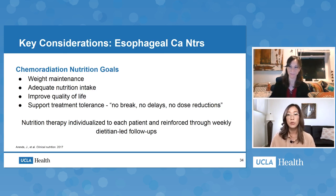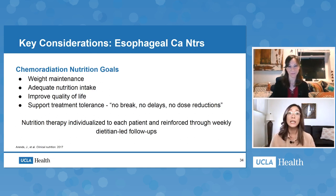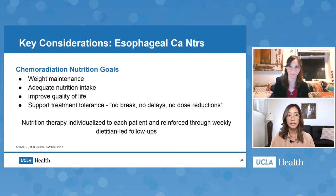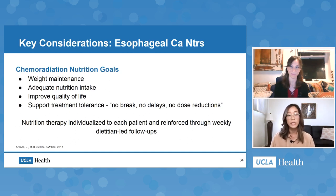Our nutrition goals during treatment are: first, to maintain weight — through weekly weight checks and weekly assessments for high-risk patients; second, to encourage adequate nutrition intake through high-calorie and high-protein intake with individualized goals; third, to improve quality of life through management of nutrition impact symptoms; and fourth, to support treatment tolerance. Chemotherapy guidelines suggest a patient needs about 85% of their original prescribed dosages to achieve the best control, so the overarching goal of oncology nutrition is really to tolerate prescribed treatment with no breaks, no delays, and no dose reductions.